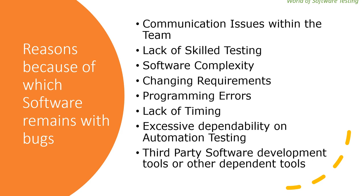The next reason is excessive dependability on automation testing. Since automation testing lacks human intuition and experience, being excessively dependent on it may cause a manual tester to miss a bug or defect. Writing automation scripts takes a lot of time, especially for complex scenarios. If the automation team writes a script but forgets to update it over time, that test becomes obsolete and won't help find defects. If automation tests are not validating results properly, they won't catch defects — this is one of the major reasons software remains with bugs.